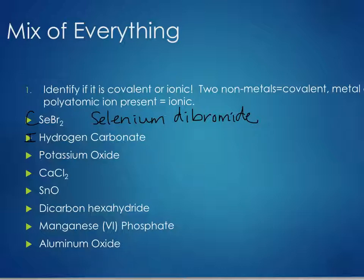Since carbonate is minus two and hydrogen is plus one, we need two hydrogens: H₂CO₃. For potassium oxide: potassium is in group one — a metal; oxygen is in group six — a nonmetal. That means ionic. Potassium is plus one, oxygen is minus two, so we need two potassiums: K₂O.